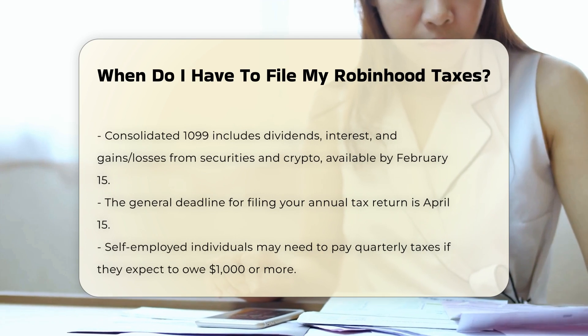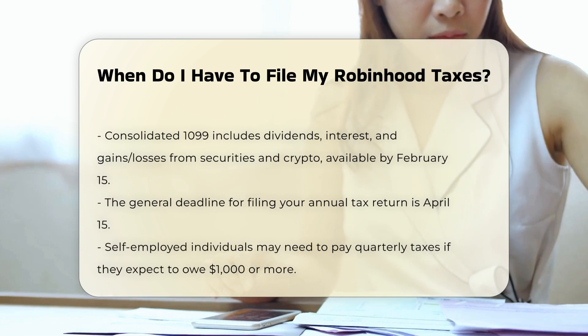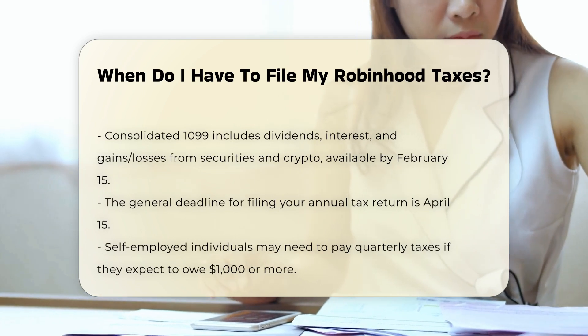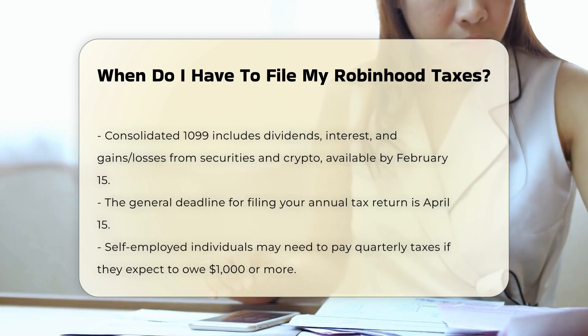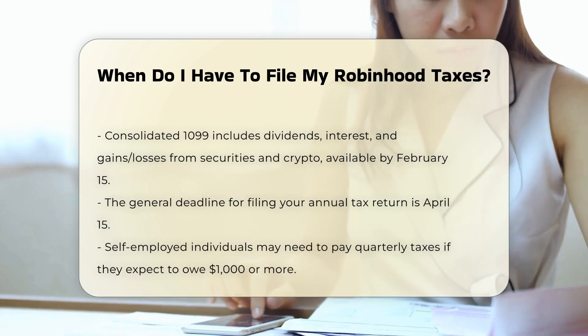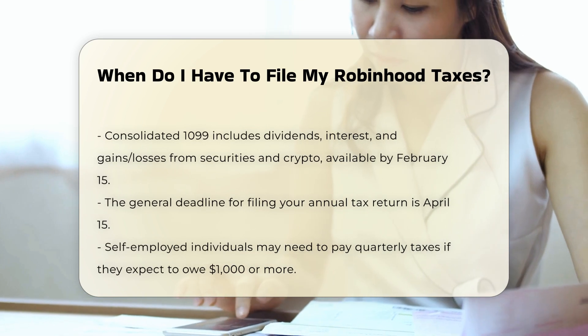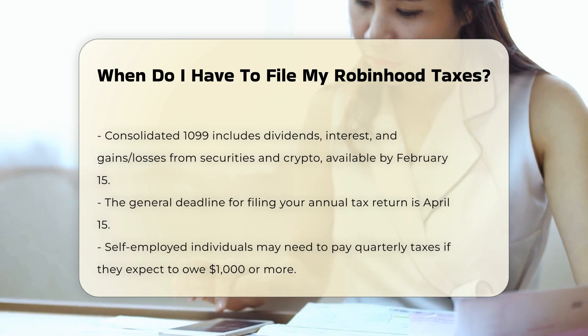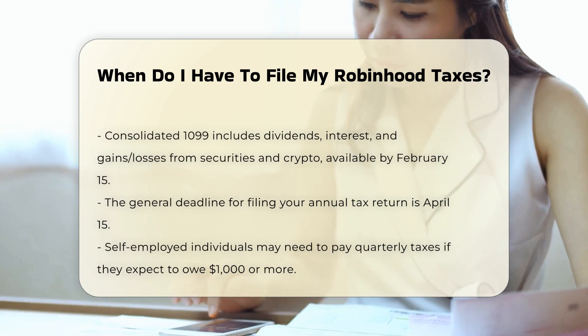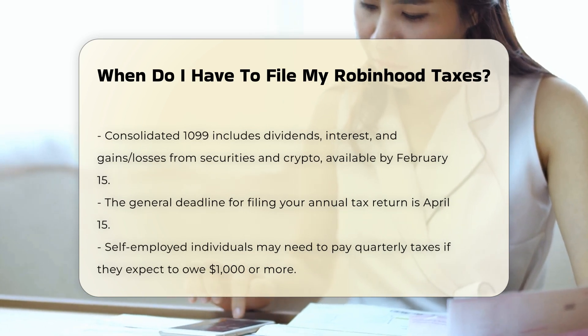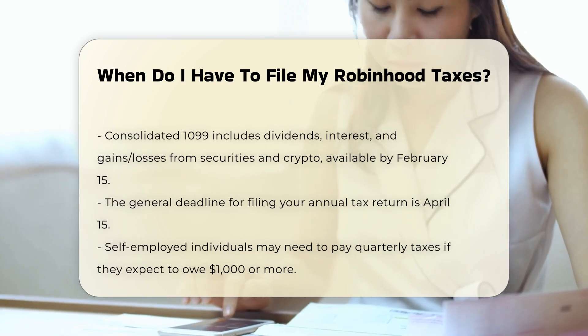Consolidated 1099: this form includes information on dividends, interest, and miscellaneous income, as well as gains and losses from selling securities and crypto. It is typically available by February 15th.